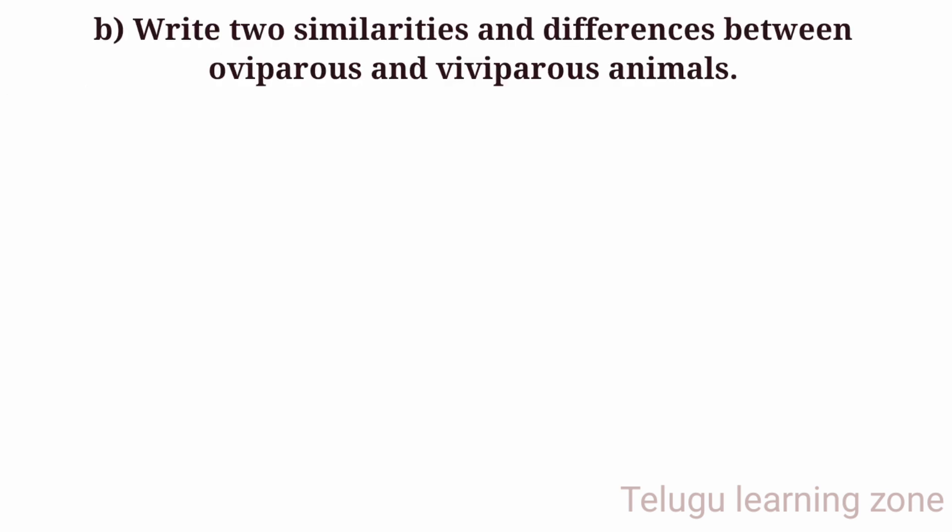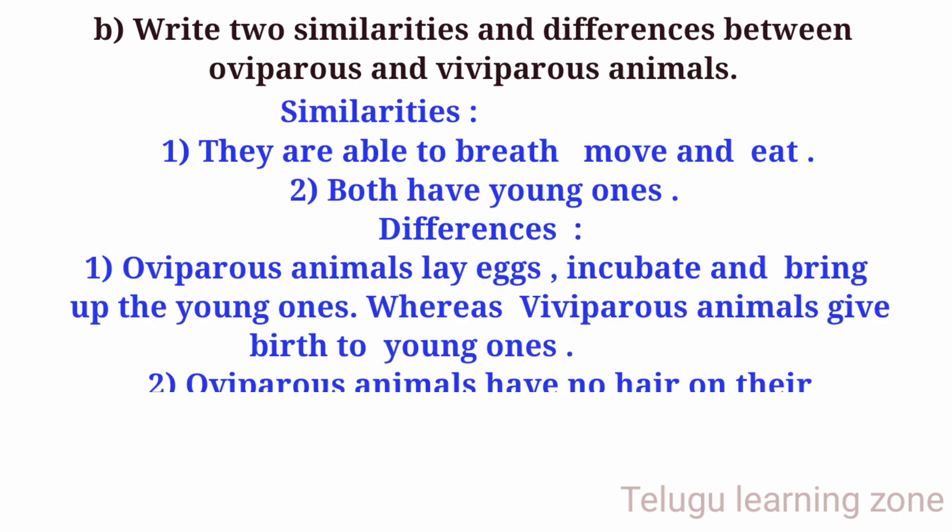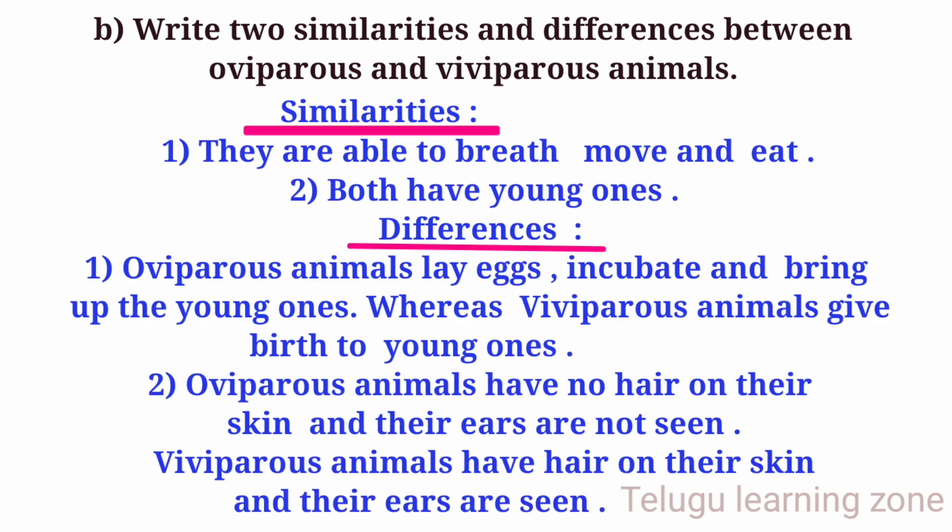Question B: Write two similarities and differences between oviparous and viviparous animals. Answer. Similarities: They are able to breathe, move and eat. Both have young ones. Differences: Oviparous animals lay eggs, incubate and bring up the young ones. Whereas viviparous animals give birth to young ones.